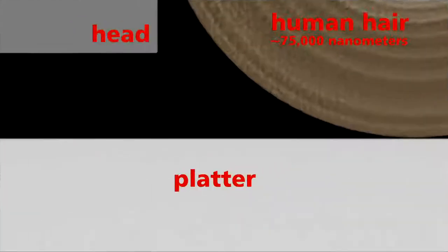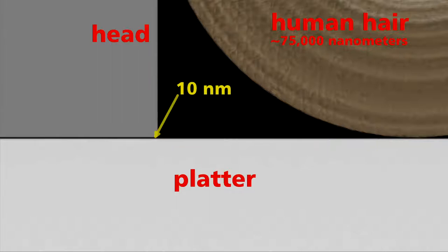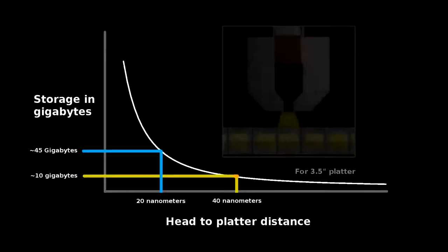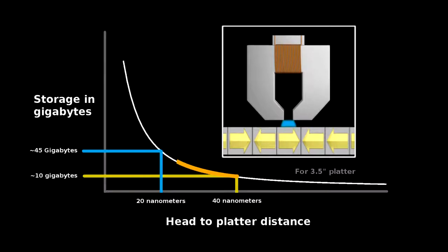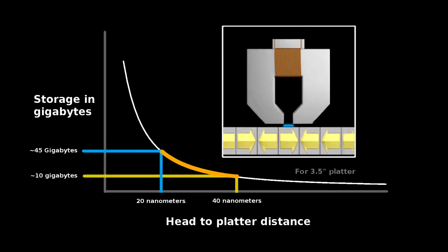The head gets astonishingly close to the disk surface. 100 nanometers in older drives, but today under 10 nanometers in the newest ones. As the head gets closer to the disk, its magnetic field covers less area, allowing for more sectors of information to be packed onto the disk surface.